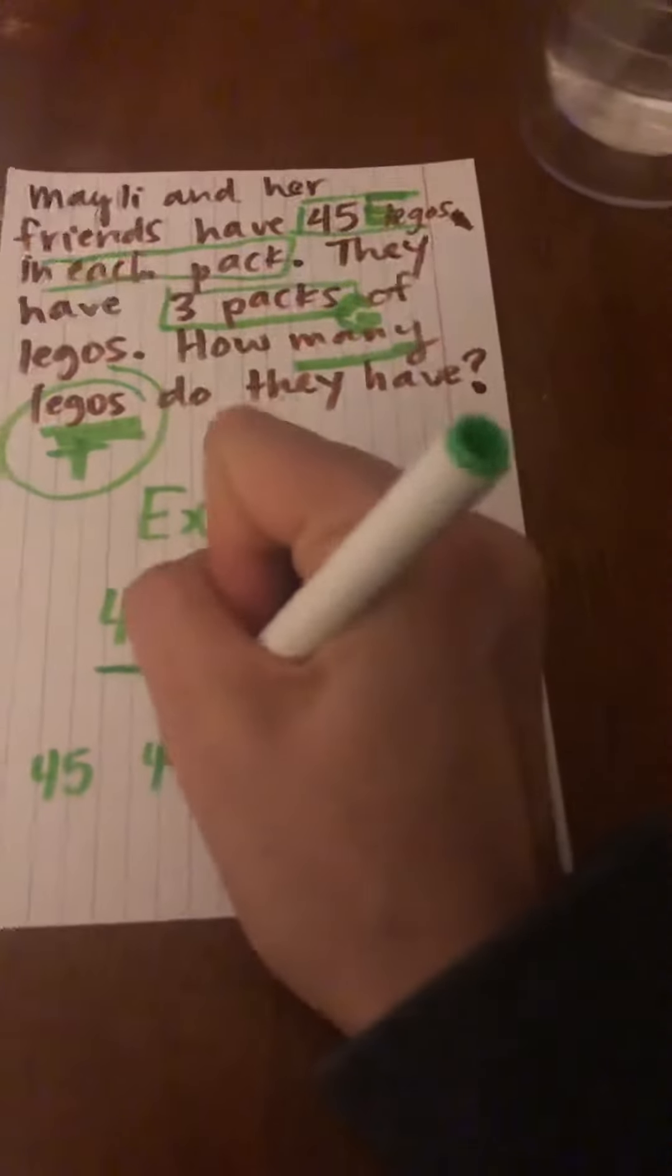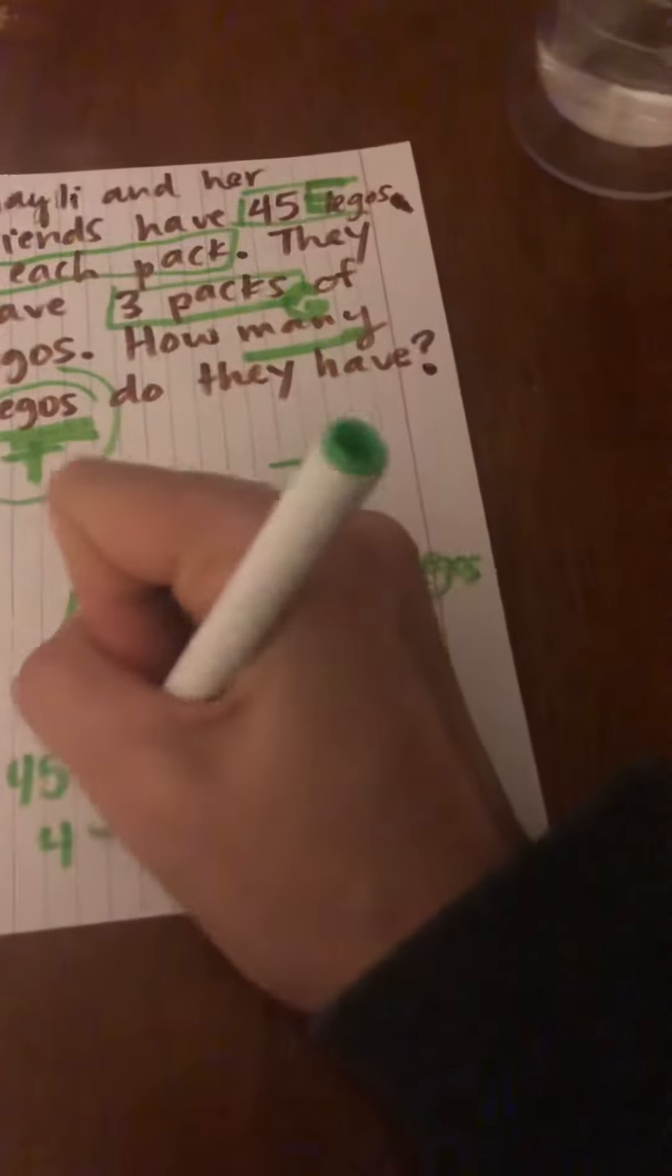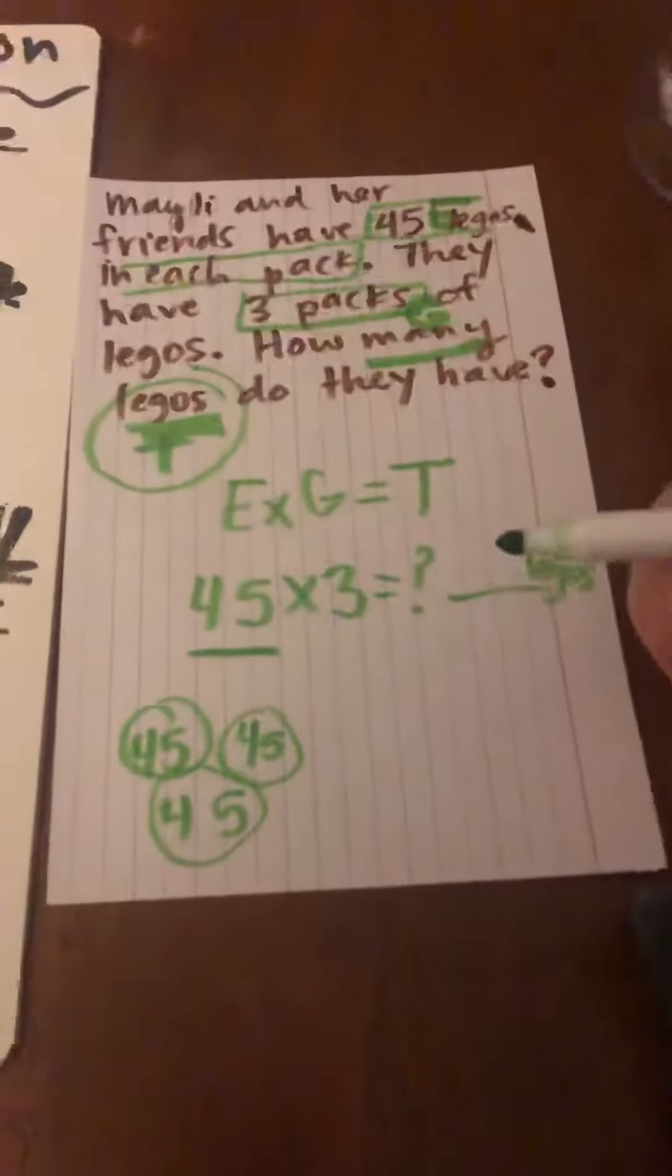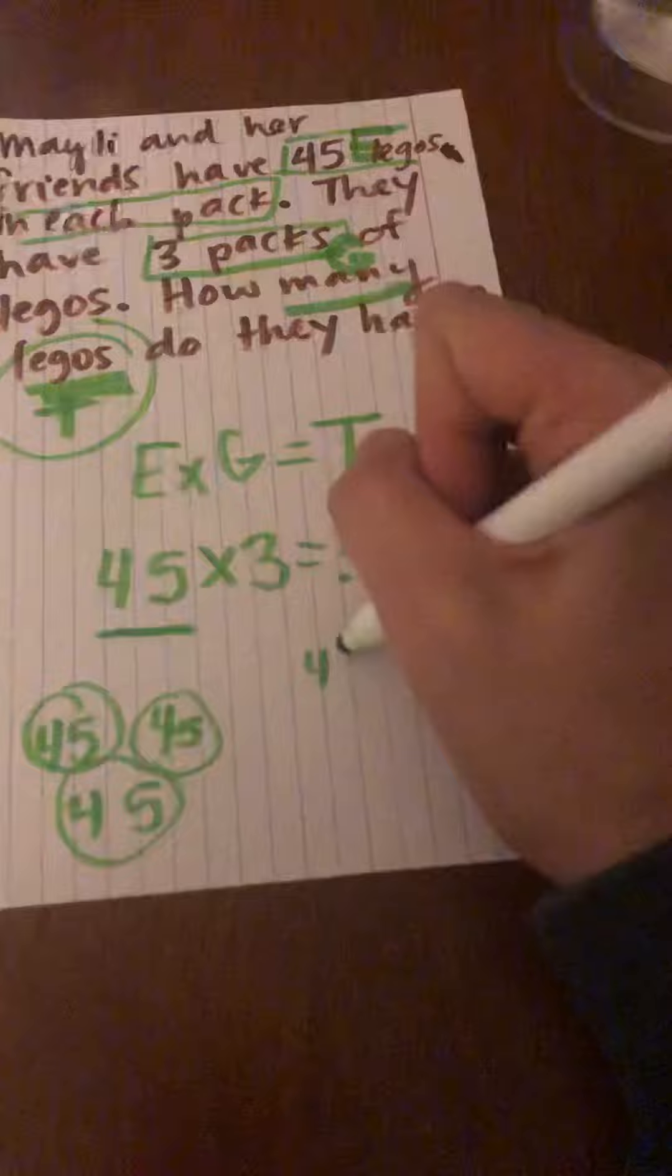I know this is gonna be three groups of 45. One, two, three... one, two, three. And I can add those one at a time.